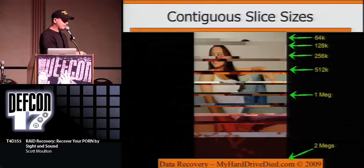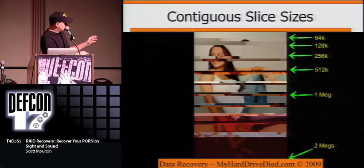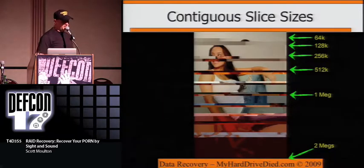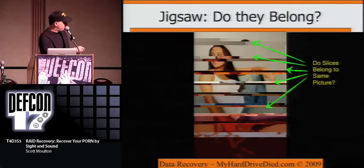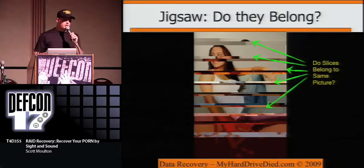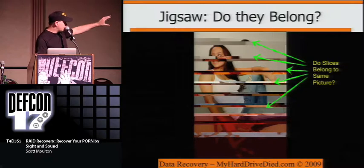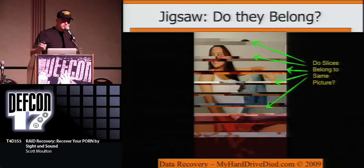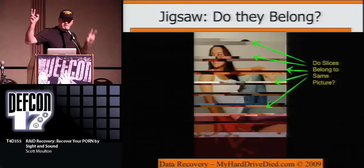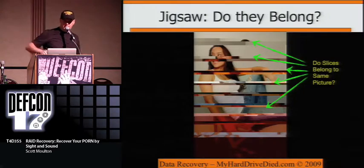Then you can take the extracted files and break it down — if it's supposed to be a 2-meg file, what is my slice size? You start dividing until you get a slice size that looks contiguous. That contiguous slice size is most of the time the correct one. You can then look at whether other slices belong to the same picture. This is where you resolve two unknowns at once — if the picture has slices that look weird and don't fit, you've got both a slice size problem and an order problem. Either the logical arrangement of the drive is wrong, or the order of physical drives is wrong.